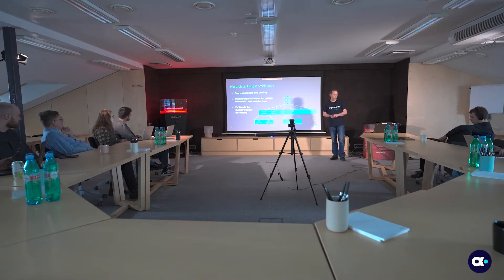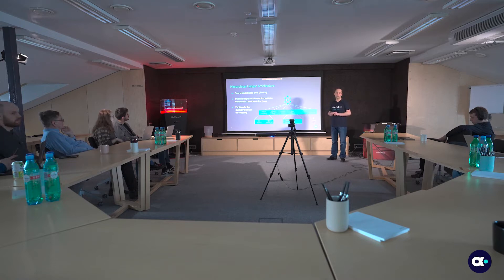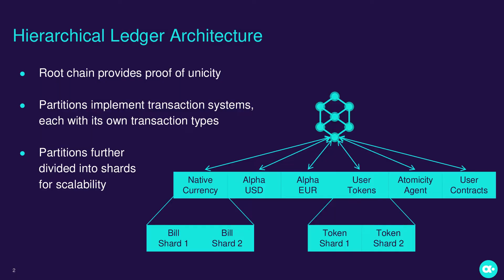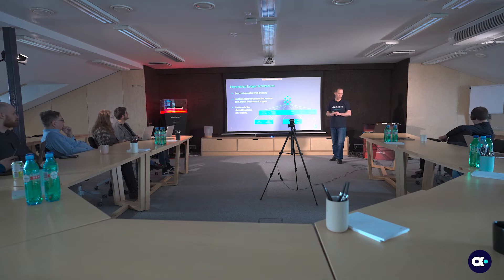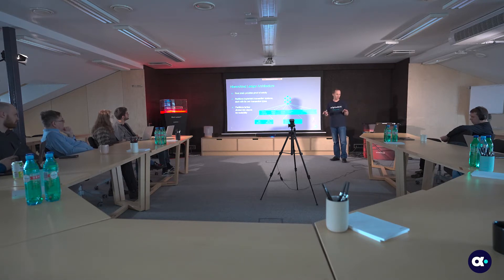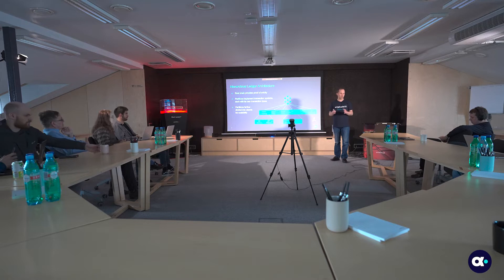To put this programming model in context, a few words about the general architecture of Alphabill. Alphabill's architecture is based on the principle of hierarchical ledger consensus. If you're familiar with the blockchain trilemma — where you can have scalability, security, and decentralization, but inside one blockchain system you can have only two out of those three — the way Alphabill resolves this trilemma is that the root chain provides decentralization and security, while scalability is handled by the hierarchical architecture.